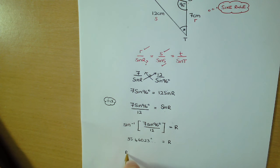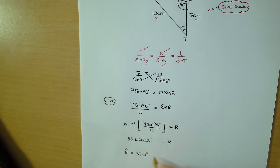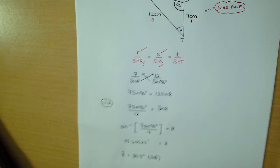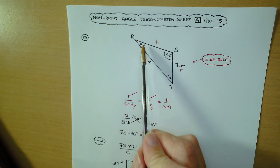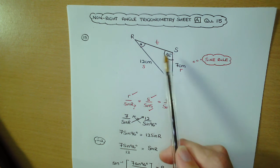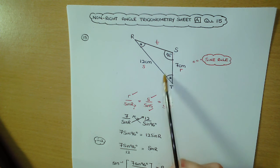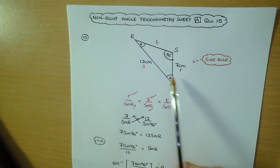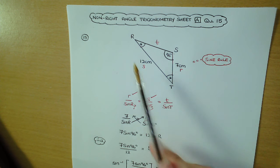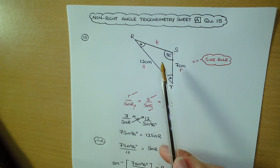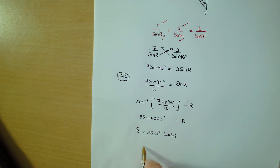So we've worked out angle R. Angle R is going to be 35.5 degrees, and that's to 3 significant figures. So we've got angle R. If you go back to the diagram, remember, once you've worked out R and you know what S is, it's just simple math to work out T. You don't need to use the sine rule again. Just use the fact that angles in a triangle add up to 180 degrees. So now we're going to get angle T.